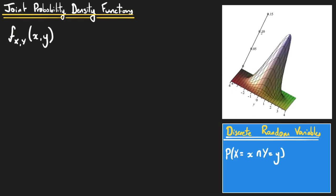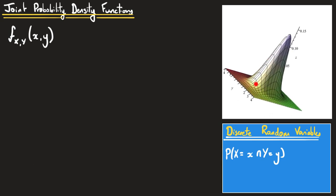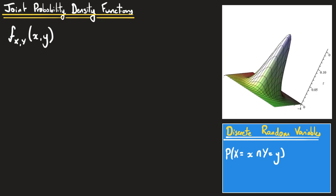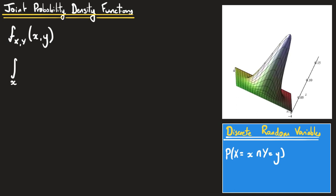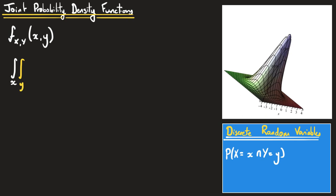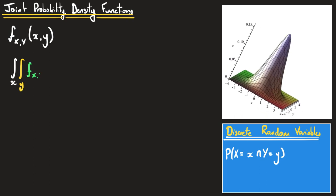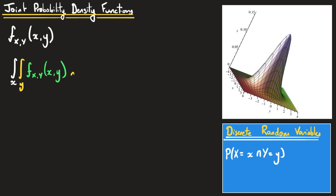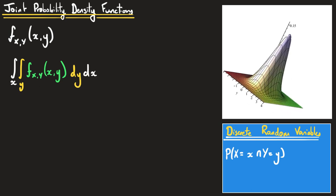In order for this to be a well-defined probability density function, it needs to be the case that all of the probability is contained under our PDF. In other words, the integral over the whole range of x of the integral over the whole range of y of our probability density function needs to be equal to one.